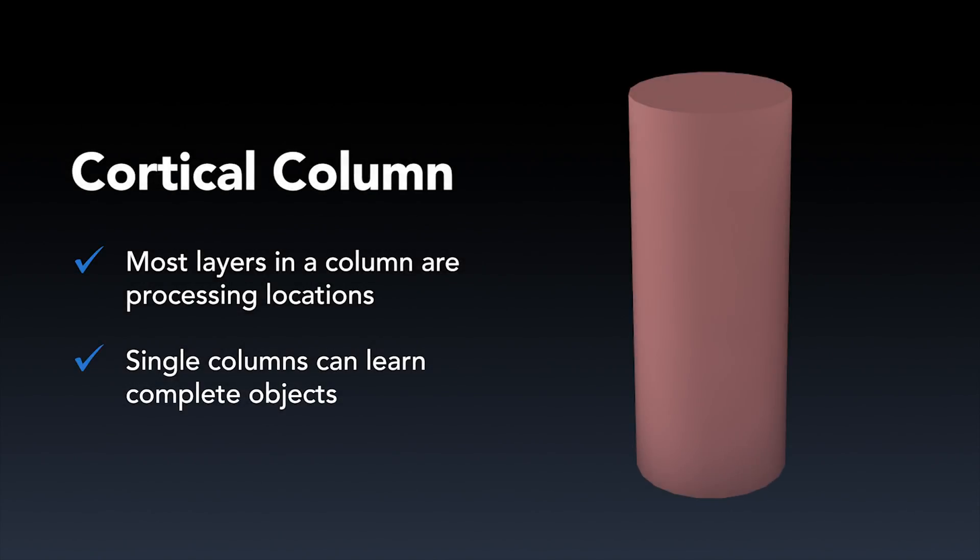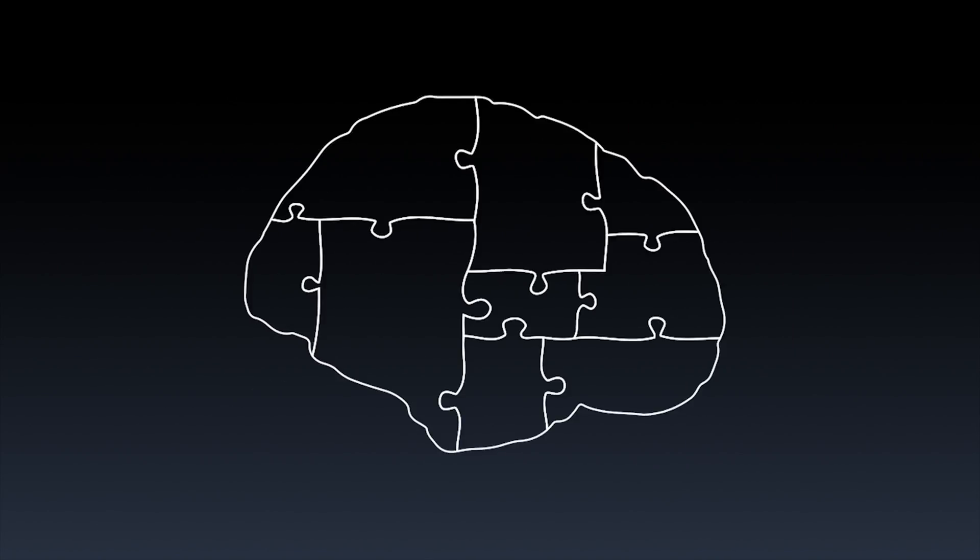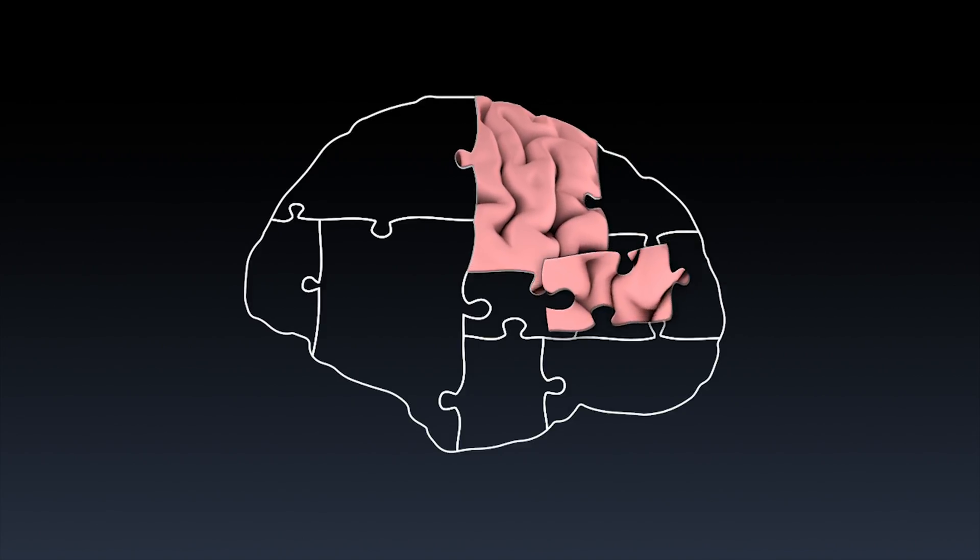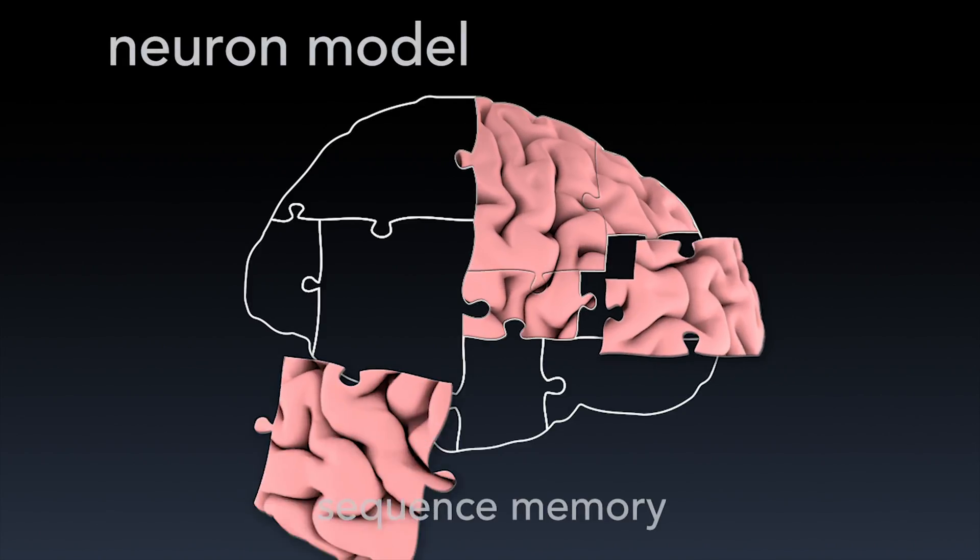When you understand that a cortical column can create complete models, it forces you to rethink how the neocortex works as a whole. We have more to do, but we've made great progress and are moving closer to having a complete framework for how a cortical column works.